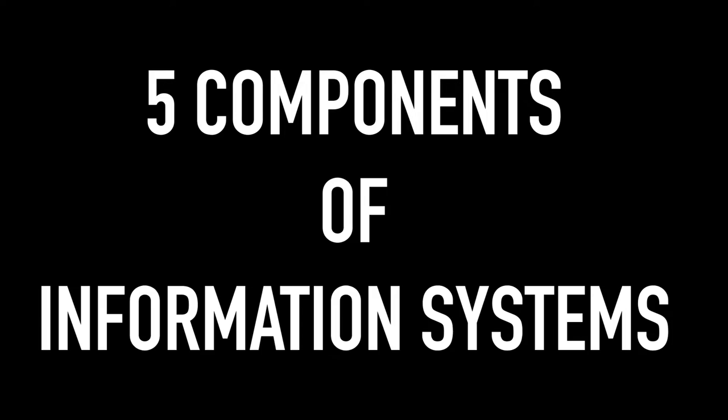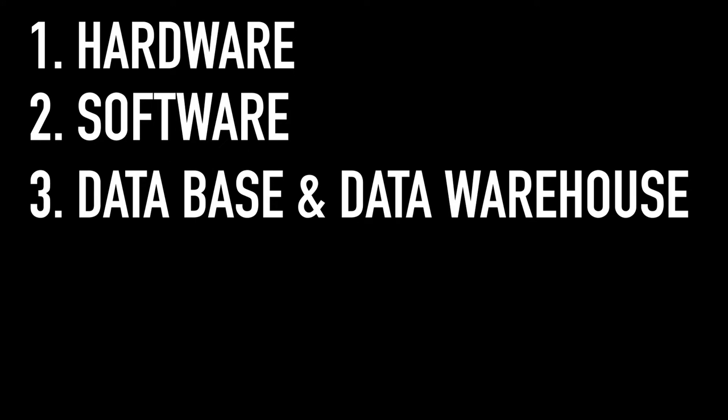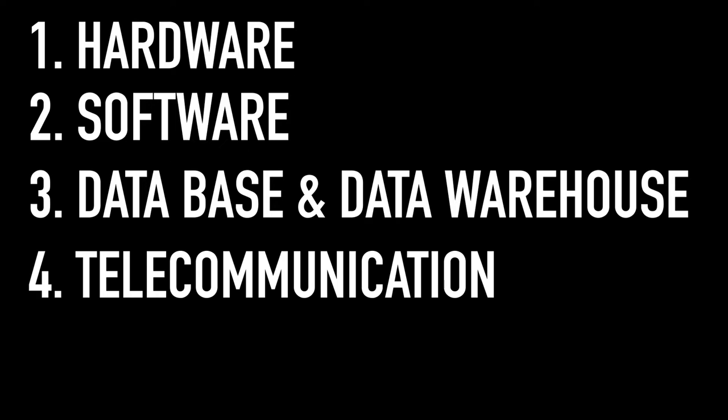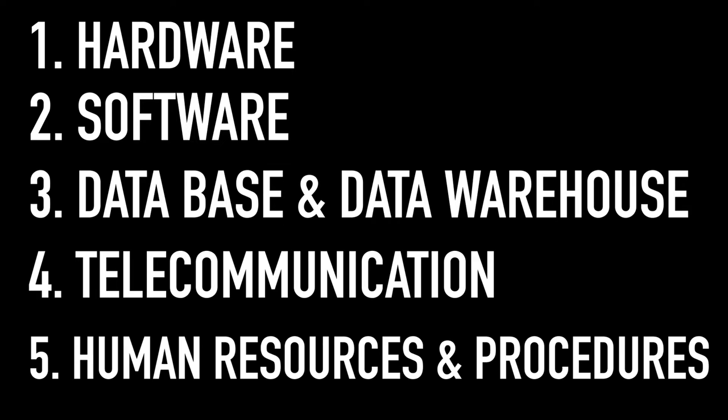The first component of information systems is hardware. The second is software. The third one is database and data warehouse. The fourth one is telecommunication. And the last one, and also one of the most important, is of course human resources and procedures.